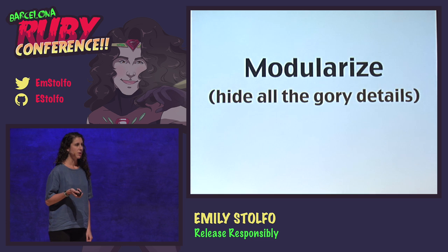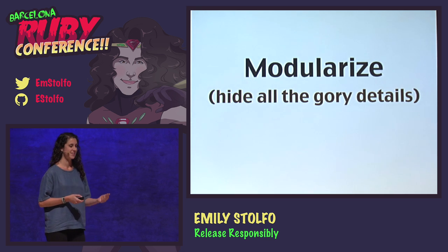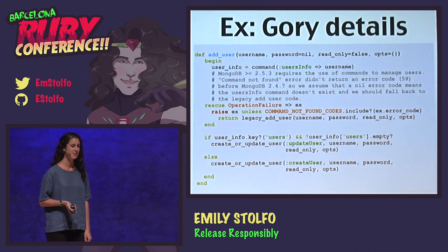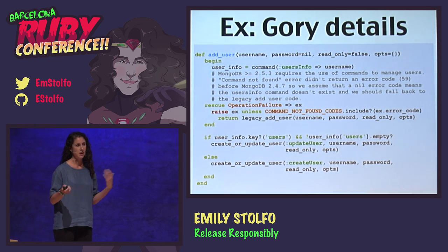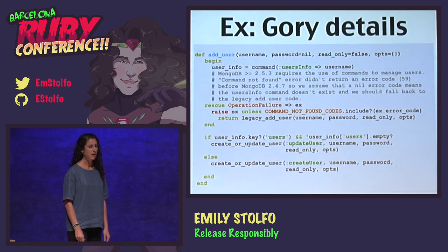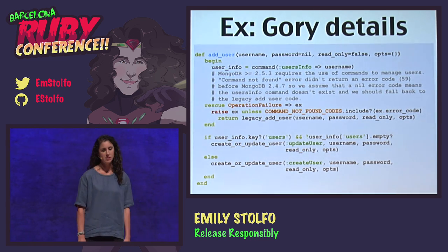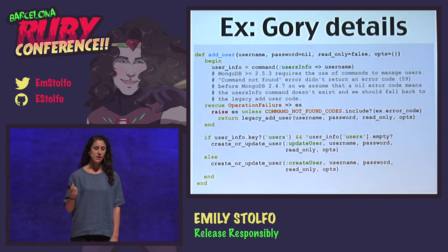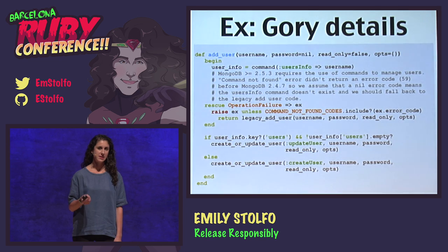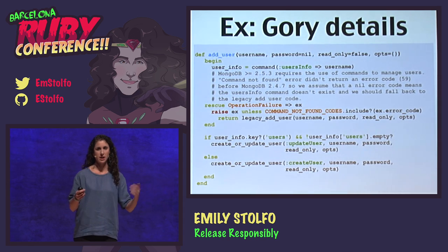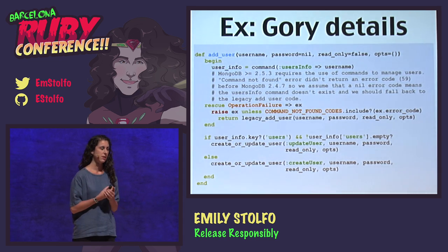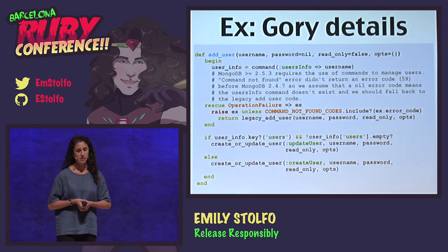Another approach is to modulize — hide all the gory details yourself. In the Ruby driver, I use the add_user method as an example. This is a method in the database class that lets you add a user — you provide a username, password, roles, and a deprecated read-only flag. This method has not changed at all in the Ruby driver, but it works with every single version of the database: 1.8, 2.0, 2.2, 2.4, 2.6, and 2.8 coming soon.